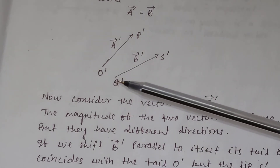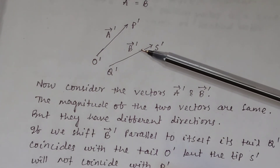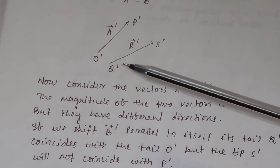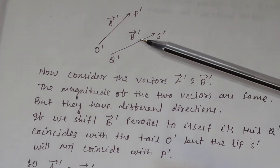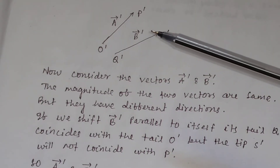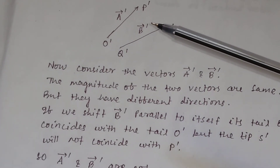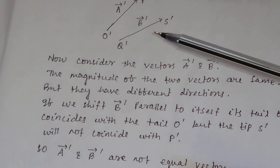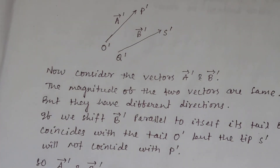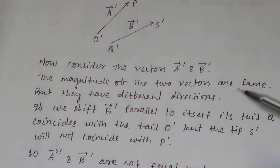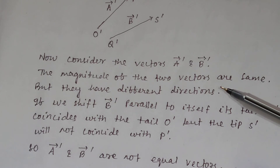If you shift vector B prime parallel to itself, then its tail Q prime coincides with the tail O prime, but the tip S prime will not coincide with the tip P prime. So in this case, you can say that A prime and B prime are not equal vectors. In this way, you can draw equal vectors and non-equal vectors.